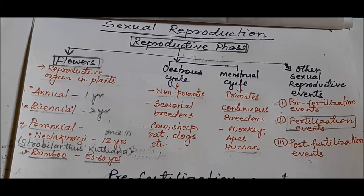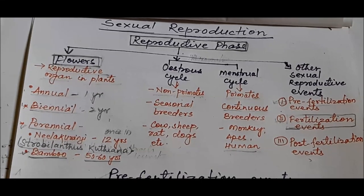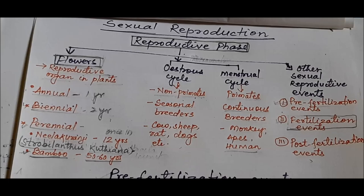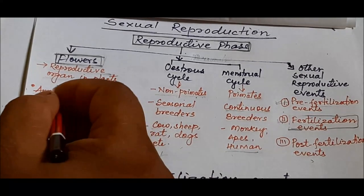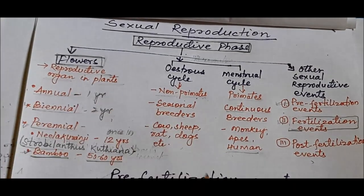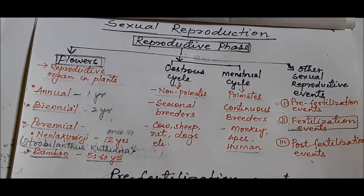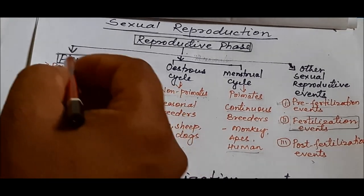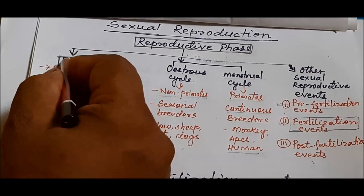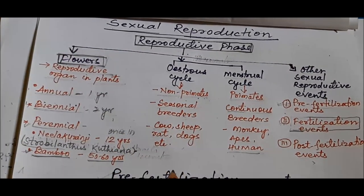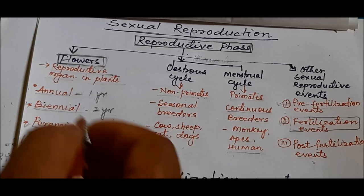The reproductive phase becomes a very important phase in the life cycle of sexually reproducing animals or plants. In plants, the reproductive phase has started when they start flowering. This becomes the indication that a reproductive phase in that plant has begun, because flowers are the reproductive organs of angiosperms or flowering plants.